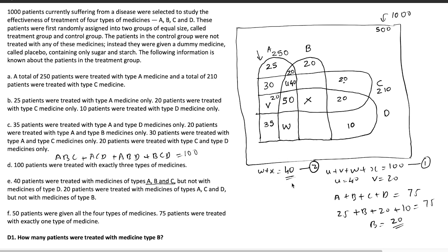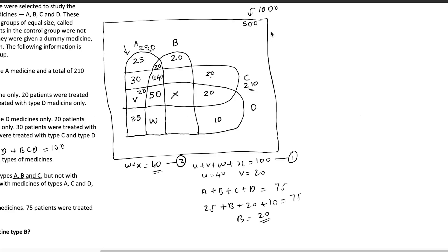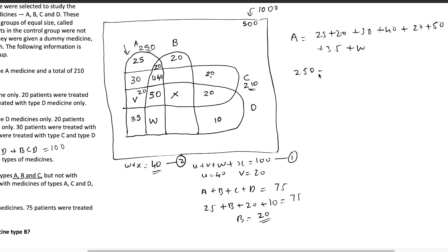Now using the total for medicine A, which equals 250: summing all A-partition values — 25 + 20 + 30 + 40 + 20 (V) + 50 + 35 + W = 220 + W = 250, so W = 30. Substituting into equation 2: X = 40 − 30 = 10. So W = 30 and X = 10.